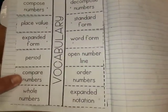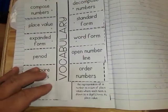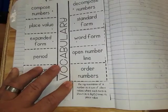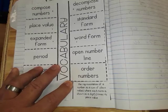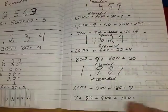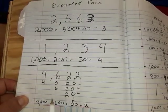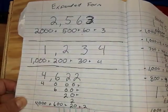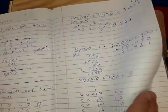Let's flip to our vocabulary and take a look at what it says about expanded notation. Expanded notation is a representation of a number as a sum of its place values, where each term is shown as a digit times its place value. It looks very similar to expanded form — the only difference is we just have the digit times its place value.